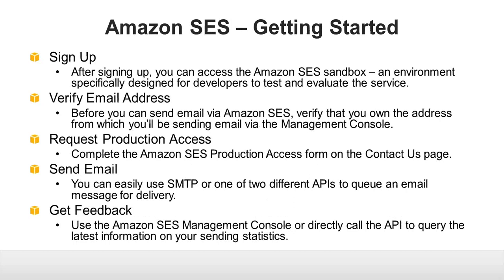To get started with Amazon SES, you sign up for AWS, verify an email address, and test out your environment. When you're satisfied, you request production access to Amazon SES. You proceed to send your email via SMTP or one of two different APIs. Finally, you use the feedback that we provide to improve your sending.